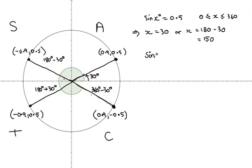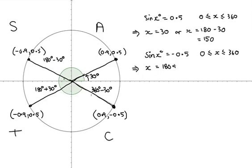Similarly, if we're solving sine of an angle equals negative 0.5, again in the range 0 to 360, this time sine being negative, we're in the third and fourth quadrants. The sine is the y-coordinate. The third quadrant angle is 180 plus 30, which is 210. Or the fourth quadrant — all the way around 360 minus 30 to get to the position where the sine, the y-coordinate, is negative 0.5 — giving 330 degrees.